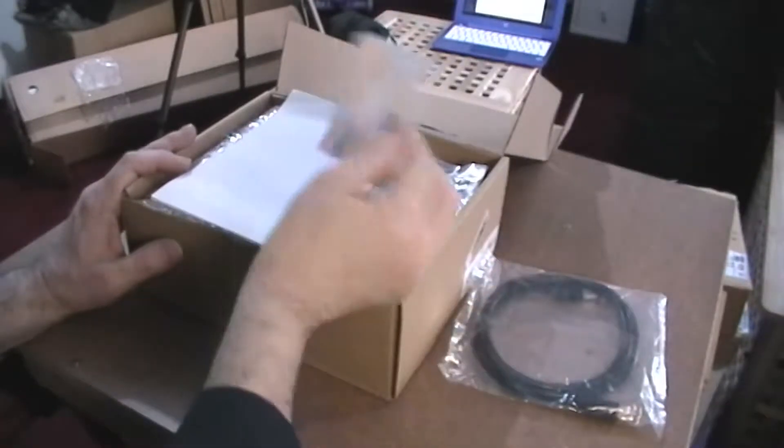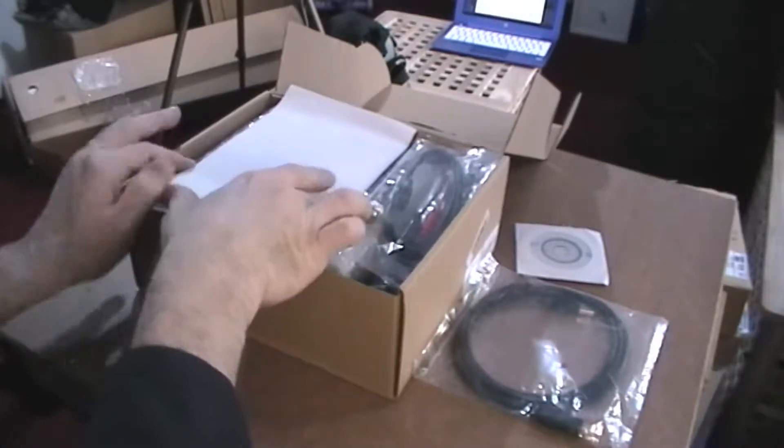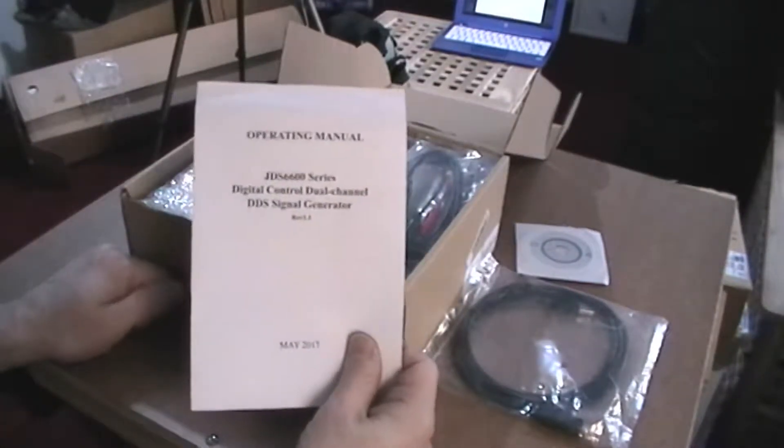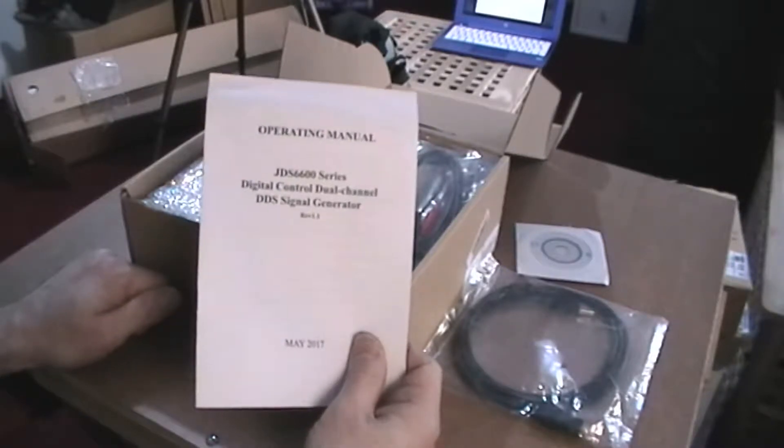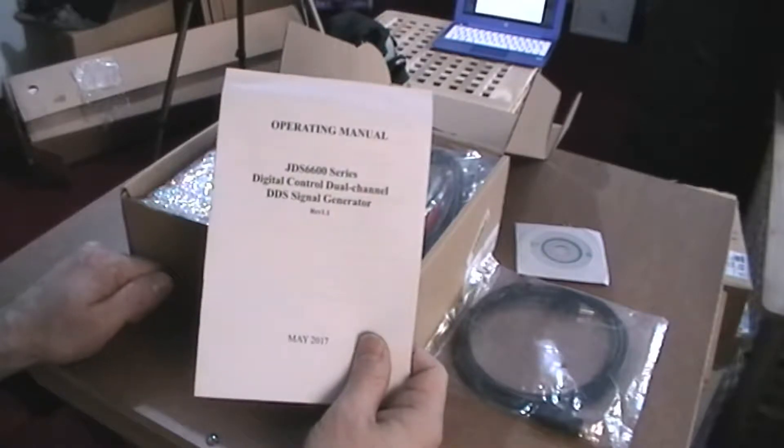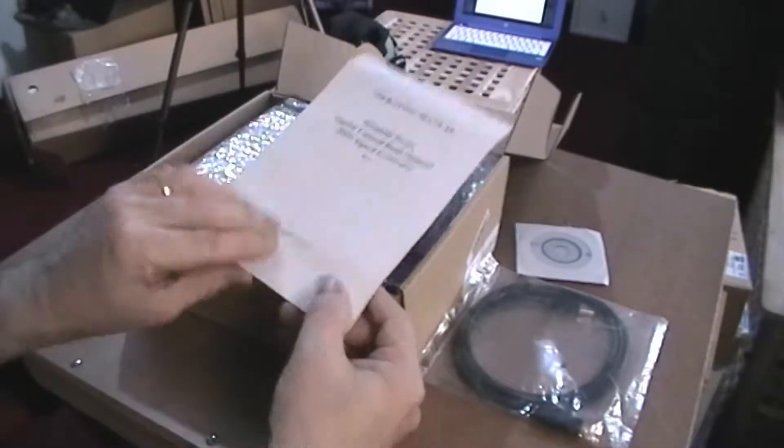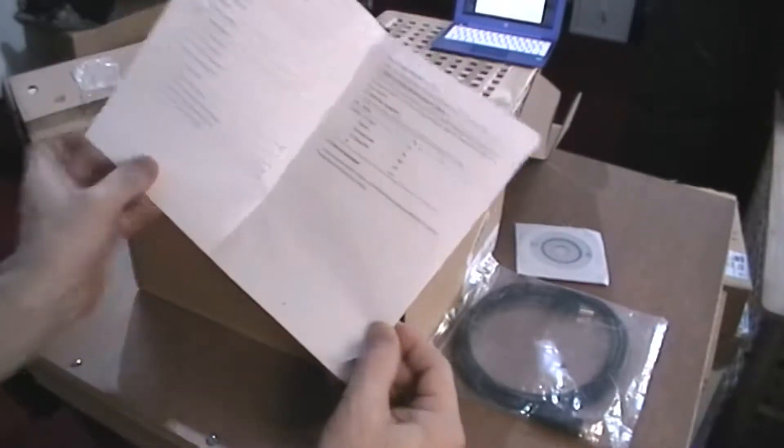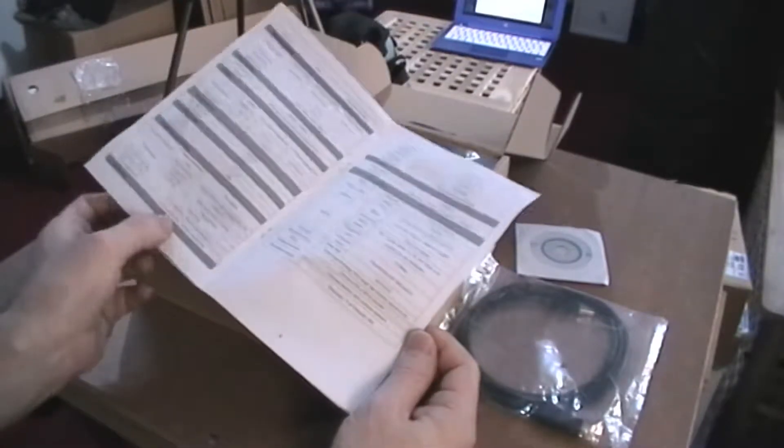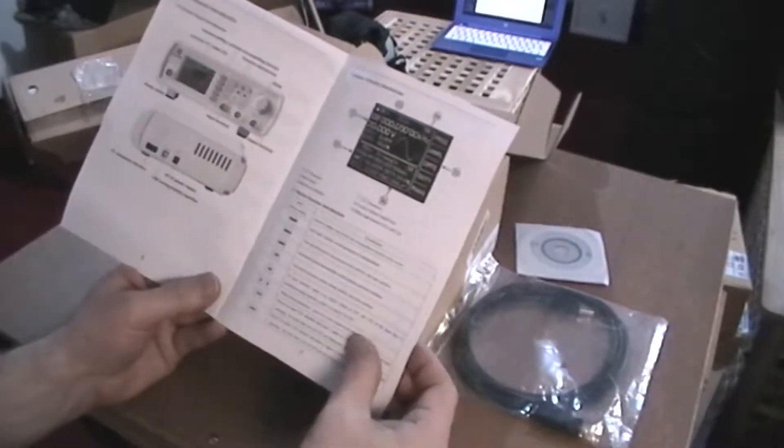USB cable, mini CD. I'm sure many people haven't got an optical drive in their unit anymore. So here we have the operating instructions for the JDS 6600 series digital control dual channel DDS signal generator, Revision 1.1 from May 2017. Well it's not that far out of date. I suppose it probably tells me how to turn it on and check a few simple items. It's not really what you call thorough.